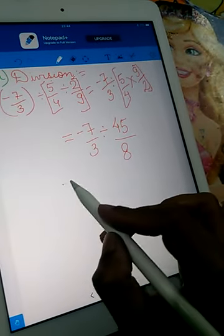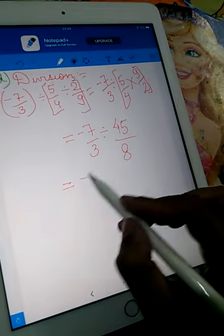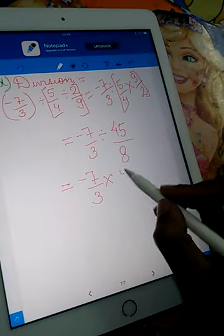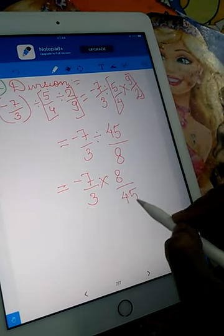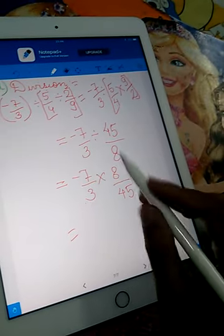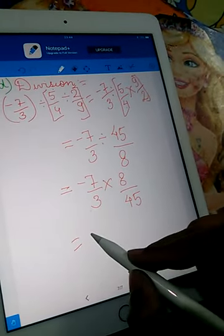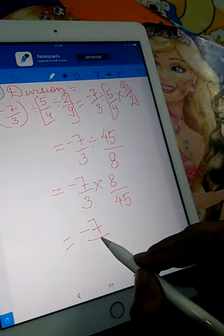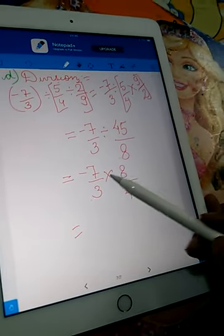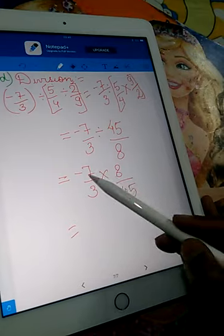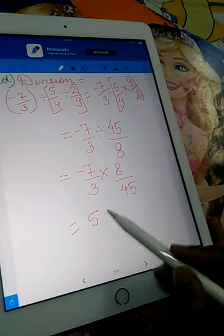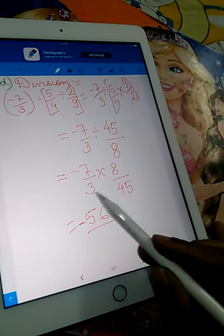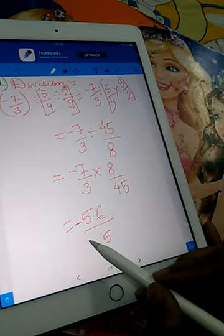Then we go ahead, again this division sign changes to multiplication and we write the reciprocal of 45 by 8, that is 8 upon 45. Nothing can be cancelled here, no factors. So minus 7 will be multiplied to 8. 7, 8's are 56 minus, and 3 into 45, 35, 135.